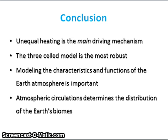To conclude, unequal heating is the main driving mechanism responsible for Earth's atmospheric circulations, as the equator receives more heat than the poles. The three-celled model is the most robust, as the single-celled model fails to take into account the Coriolis effect, which is a result of the rotation of the Earth. Modelling the characteristics and functions of the Earth's atmosphere is important because it has a direct impact on the Earth's biomes. With the potential of climate change to significantly exacerbate the problems associated with the Earth's atmosphere, modelling these circulations will only enhance our understanding to promote a cleaner and healthier planet for all. Thank you.